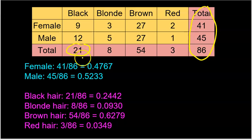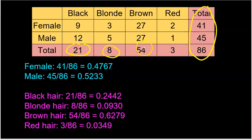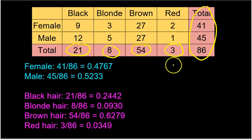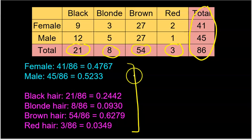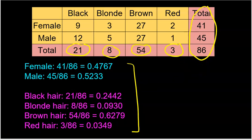We can also find marginal relative frequencies for hair color. 21 people had black hair: 21 out of 86 is 0.2442. Eight had blonde hair: 8 out of 86 is 0.0930. 54 had brown hair: 54 out of 86 is 0.6279. Three had red hair: 3 out of 86 is 0.0349. All of these together are our marginal relative frequencies — just divide each category's count by the total.